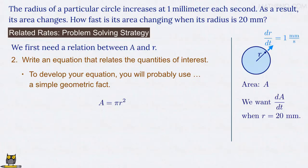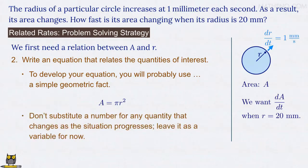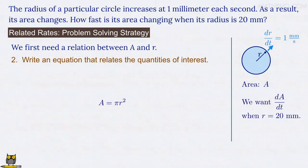Now, a common mistake at this point is to substitute 20 millimeters for r, but you can't proceed correctly if you do that. Instead, because the value of the radius changes as the circle grows, we have to leave r as a variable for now. We'll substitute r equals 20 millimeters at the end of our solution. The equation A equals π r squared actually completes the second step of our problem-solving strategy, since that's the relation between A and r that we need.